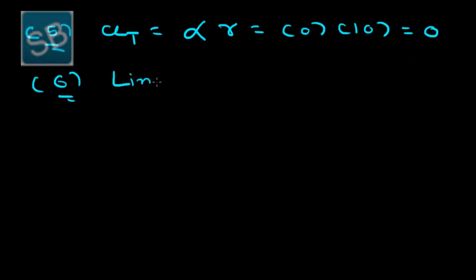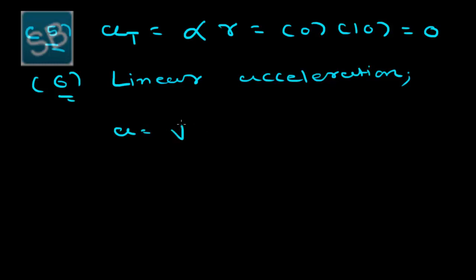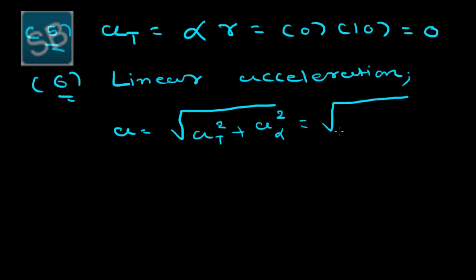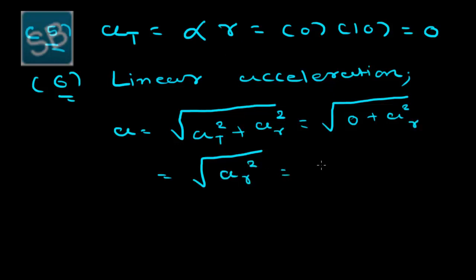For total linear acceleration, a equals √(aₜ² + aᵣ²). Since aₜ is 0, this simplifies to √(aᵣ²) equals aᵣ, which has the value π²/90 centimetres per second squared.